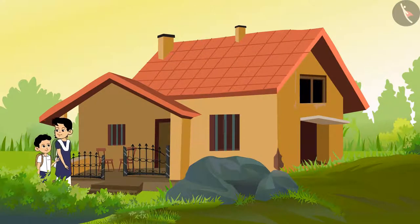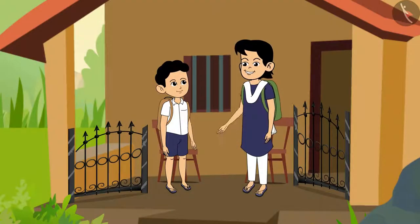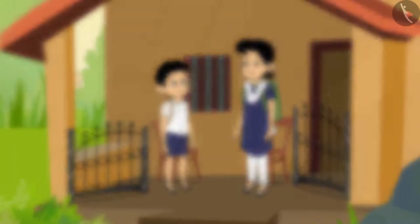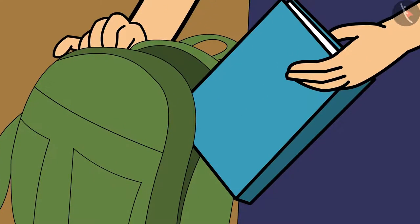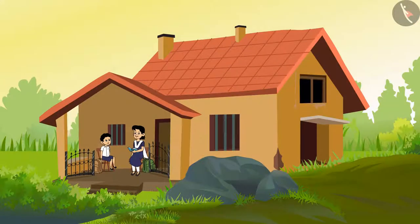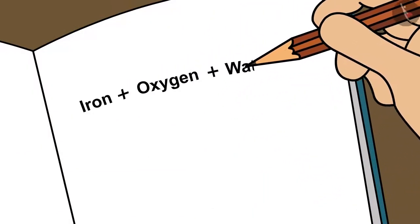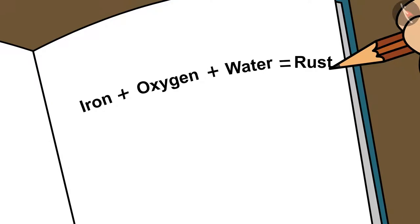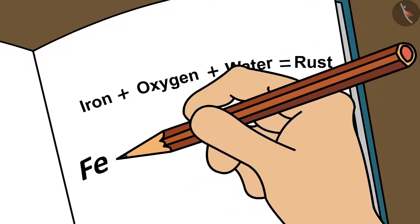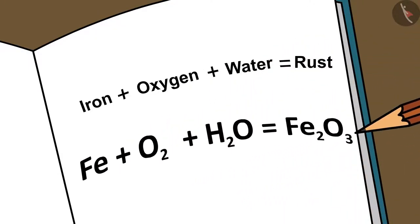At home, didi explains the rusting process in more detail. Humidity in the air is required for rusting. Iron, along with oxygen present in the air, undergoes a chemical change that causes rusting. Iron atoms react with water and oxygen, creating a new substance called iron oxide — which in common usage is known as rust.